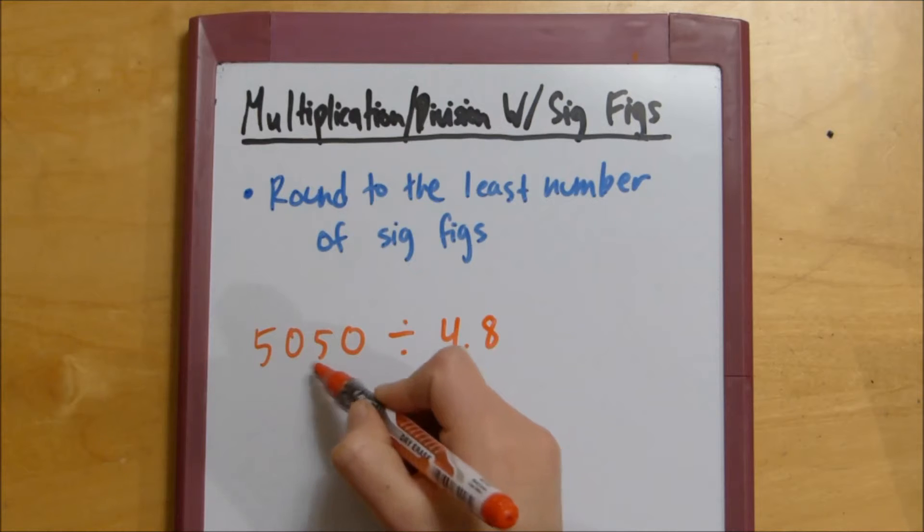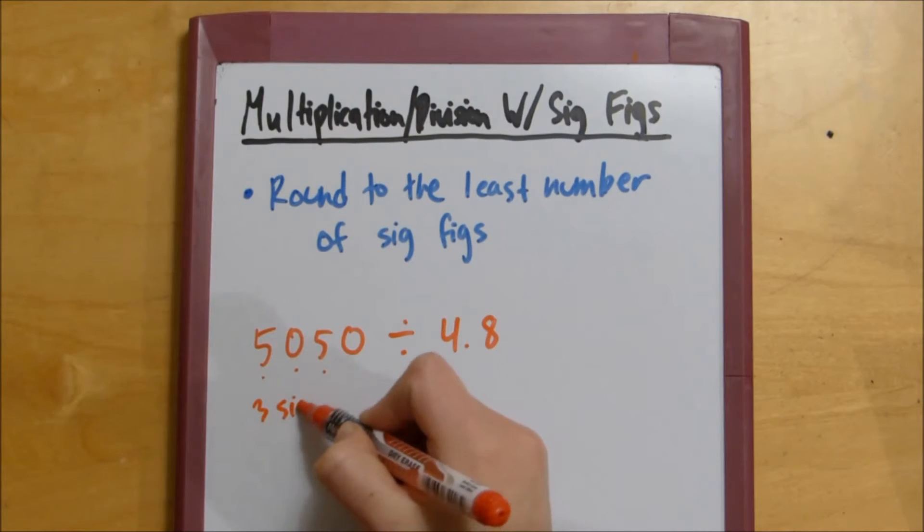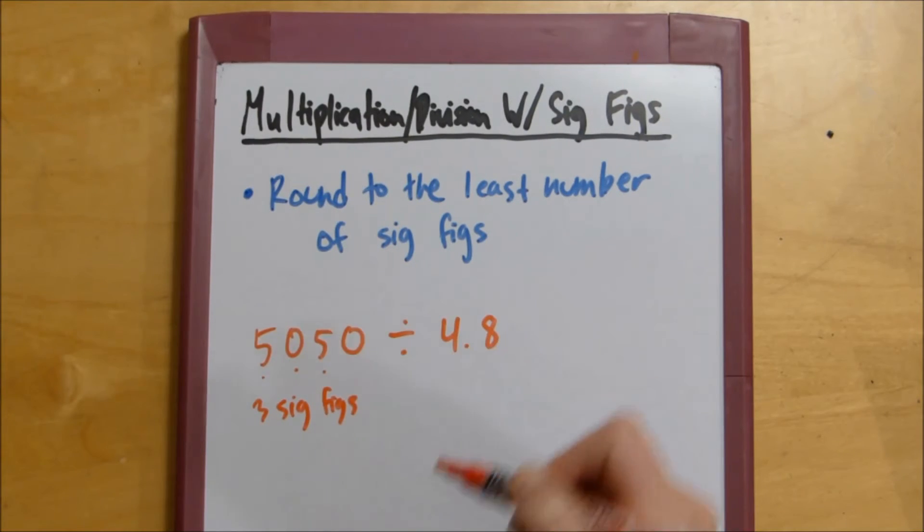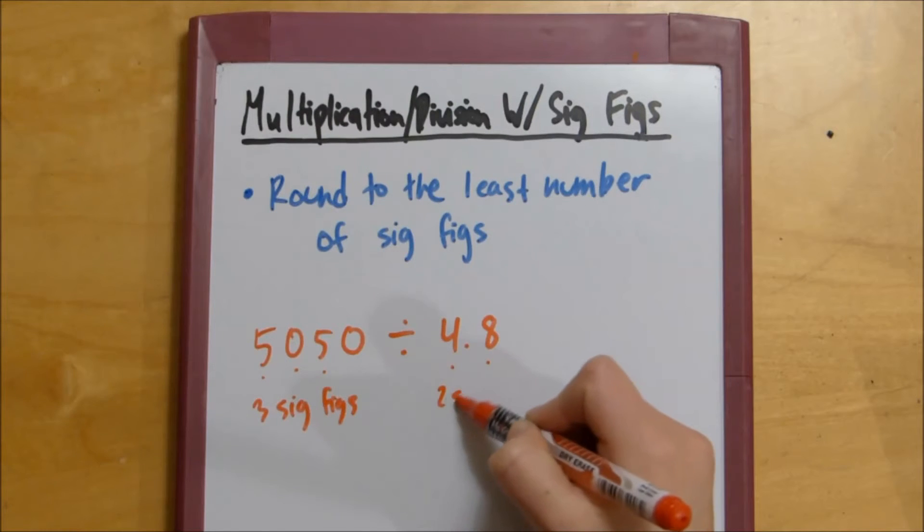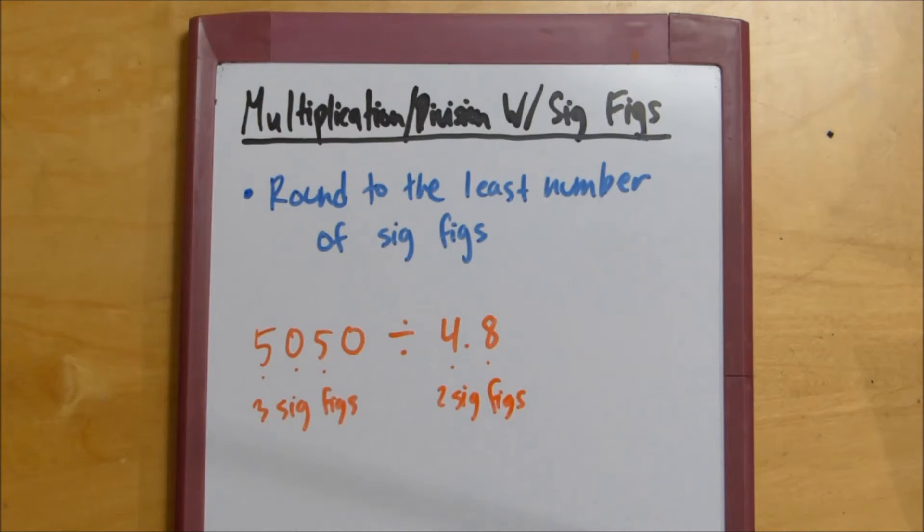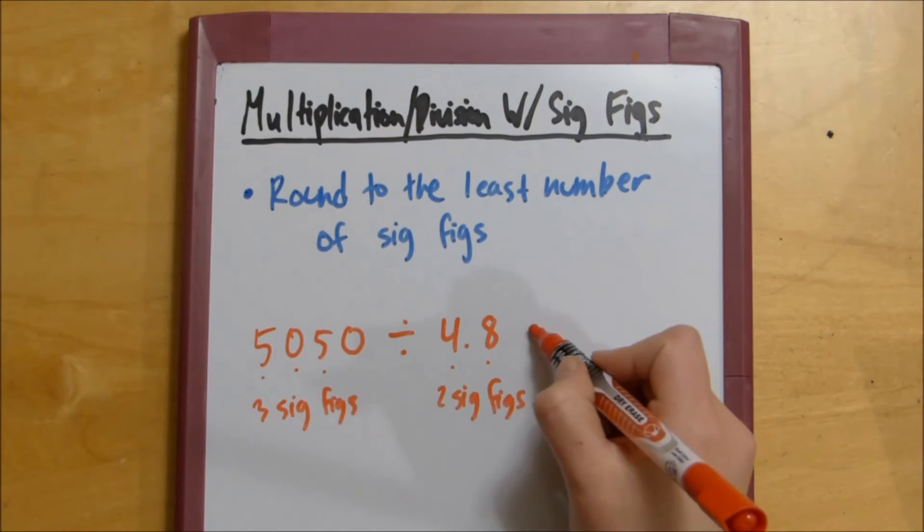This one has 1, 2, 3, 3 sig figs. This one has 1, 2, 2 sig figs. So we know our answer is going to have 2 sig figs. It's also important to note that numbers that do not have a decimal point will not always have the least number of sig figs. It's just a very common occurrence because of the additional zeros, but the numbers with decimal points can have the least amount of sig figs.